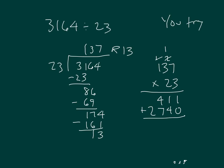Let's see if we did this right: three, one, five, one — plus thirteen — is three, one, six, four. Which was our original dividend.